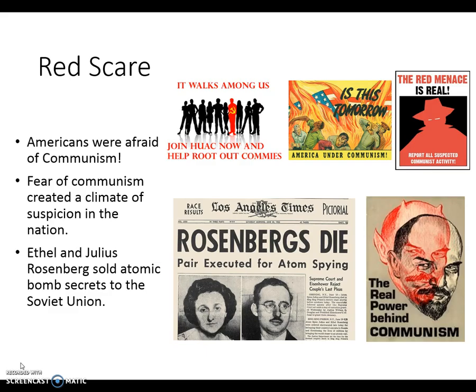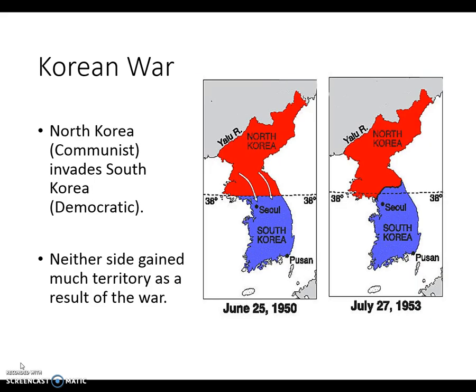In the United States, people were deathly afraid of communism. We were afraid that our neighbors were communists, afraid of communist spies, afraid that communism was going to get inside the United States and destroy us from the inside. This fear of communism created a climate of suspicion throughout the nation. Those suspicions had some truth to them when Ethel and Julius Rosenberg were arrested and charged with selling atomic secrets to the Soviet Union. They were both executed for their crimes, which justified to people that we needed to be afraid of communists working to destroy the United States from within the government.